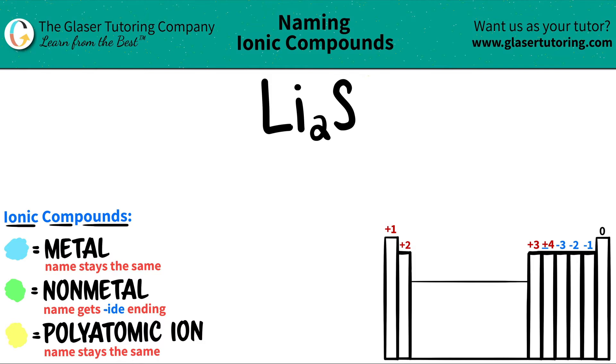So lithium — if I look at lithium on the periodic table, lithium's over here. It's the metal. All of group one are metals except for hydrogen, which is at the top. Hydrogen is a non-metal.